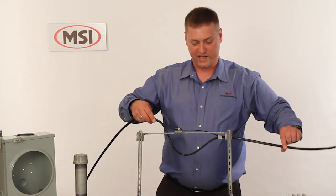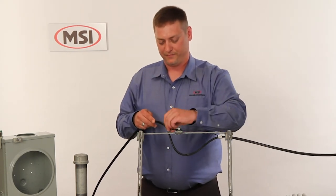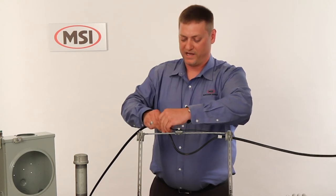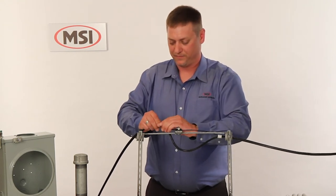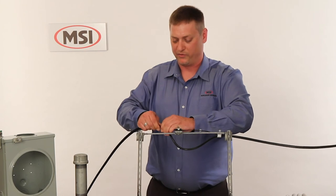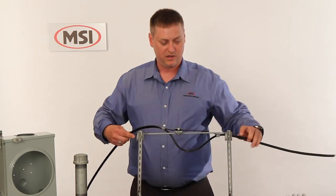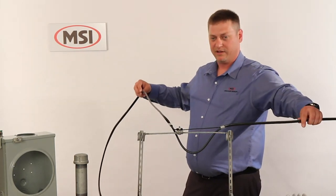Put one on each side and tighten down finger-tight—again, not using any tools that could damage the coax—and your mid-span installation is complete.